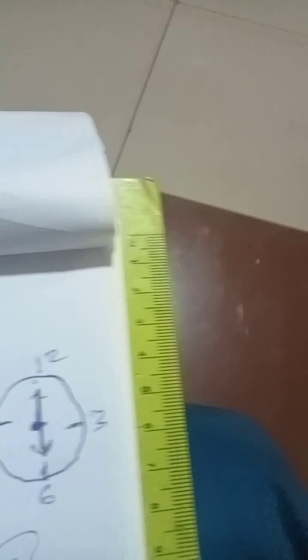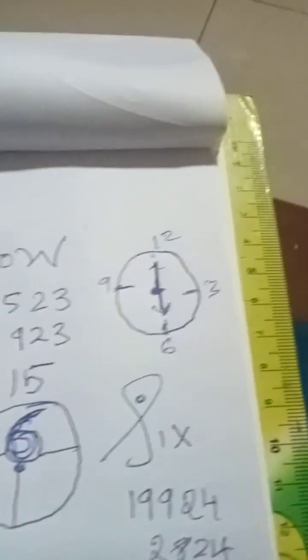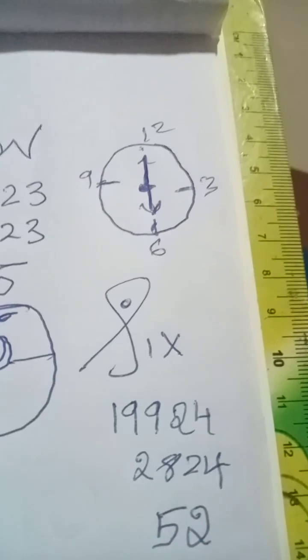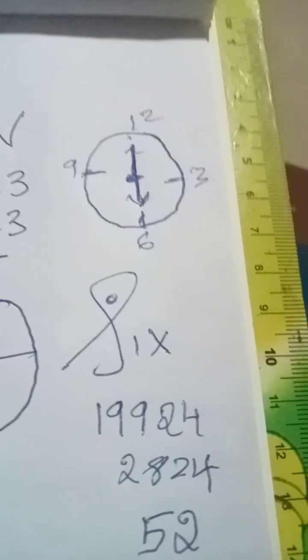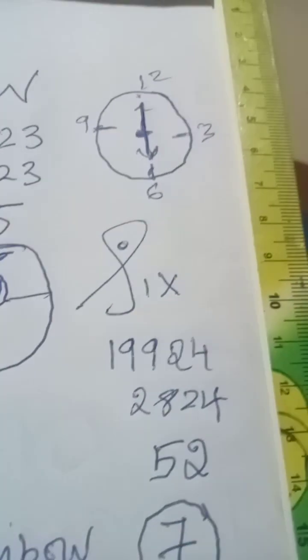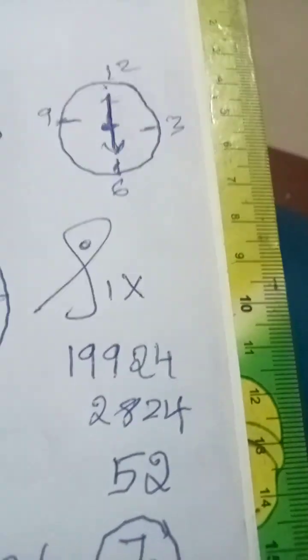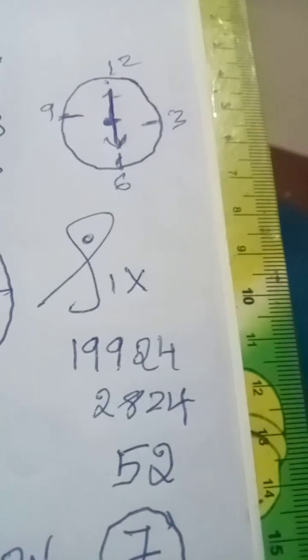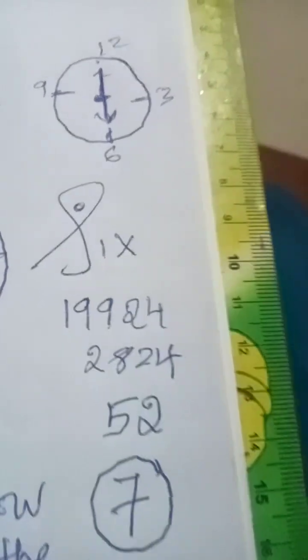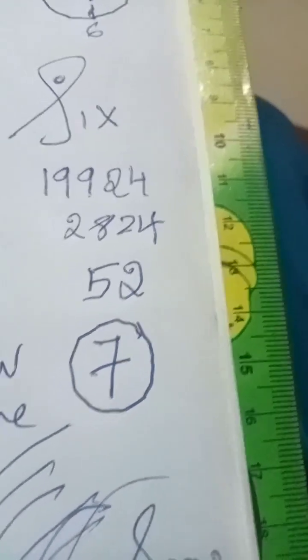Now when we got the answer of DOW is 6, what is this 6? 6 is nothing but S is 19, I is 9, and X is 24. Now 19 plus 9 is 28, and 28 plus 24 is nothing but 52. 52 is nothing but 7.